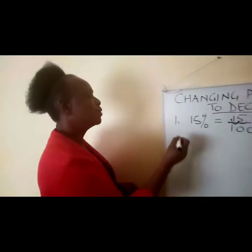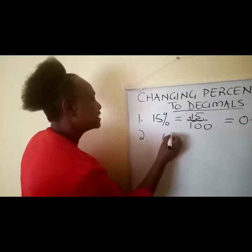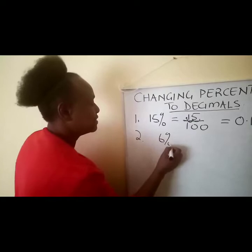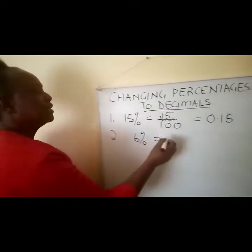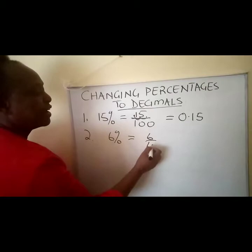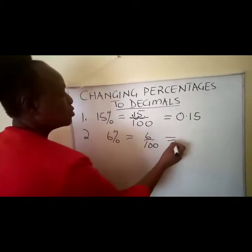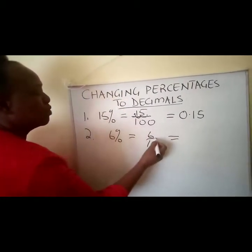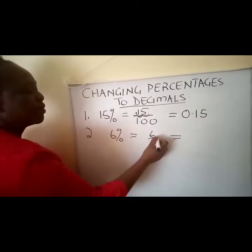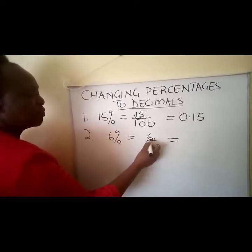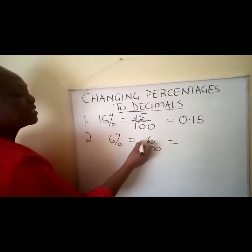So even if you are given a percentage like 6 percent, we do the same thing — it's 6 over 100. When we divide, we also move the comma. The assumption is our comma is right at the end, so we move one place, then we move another space.